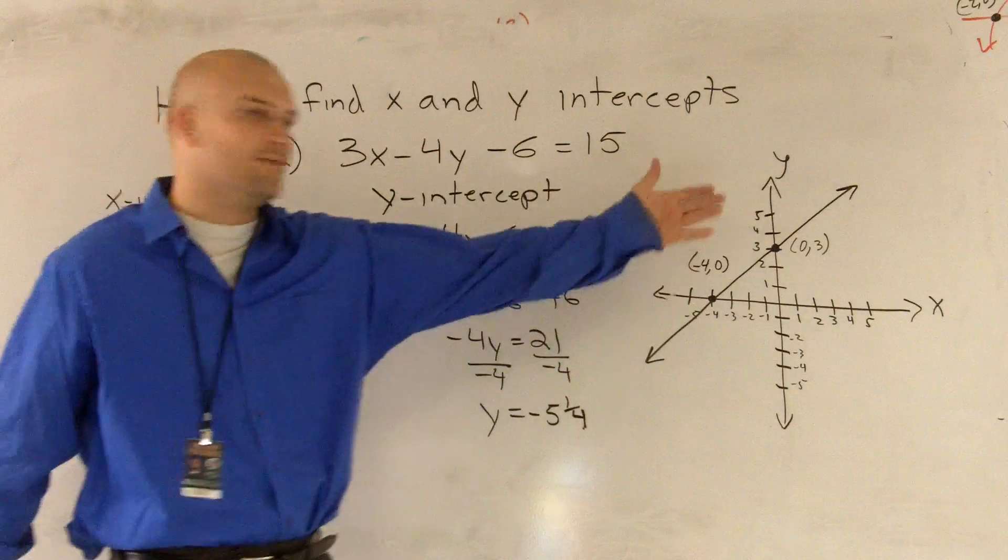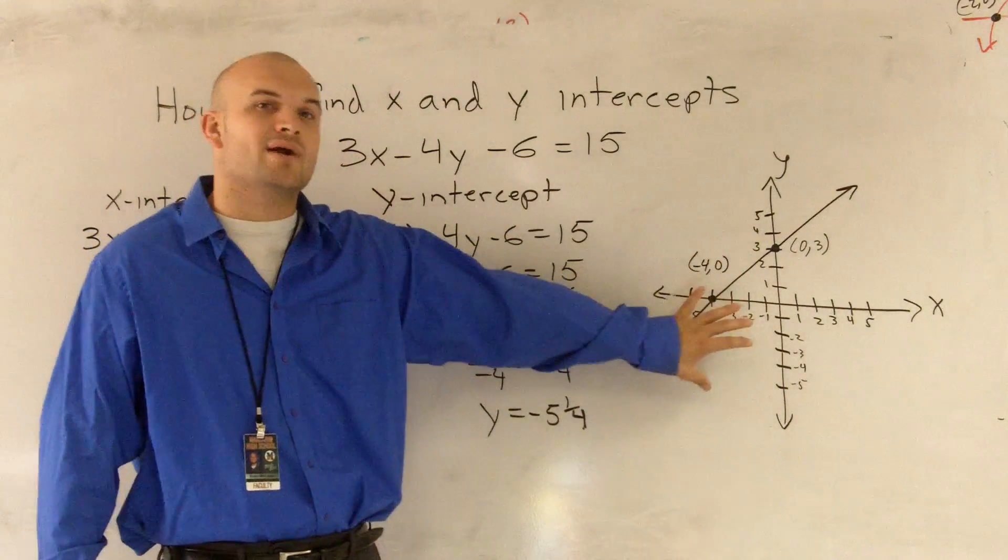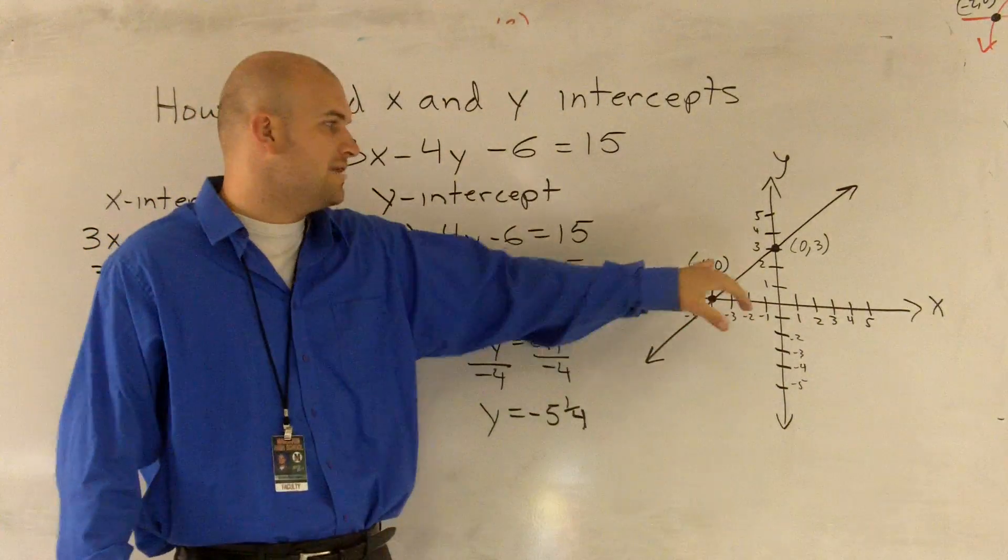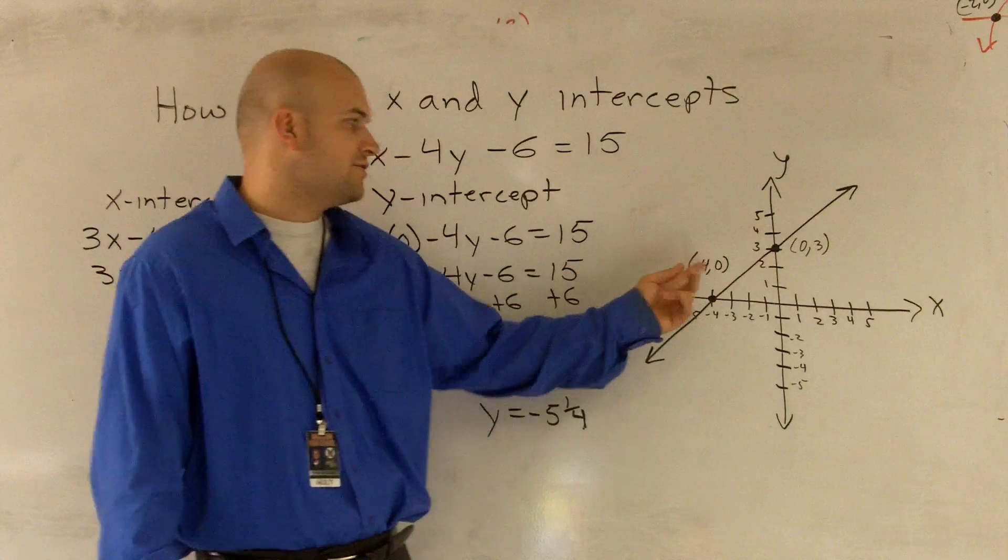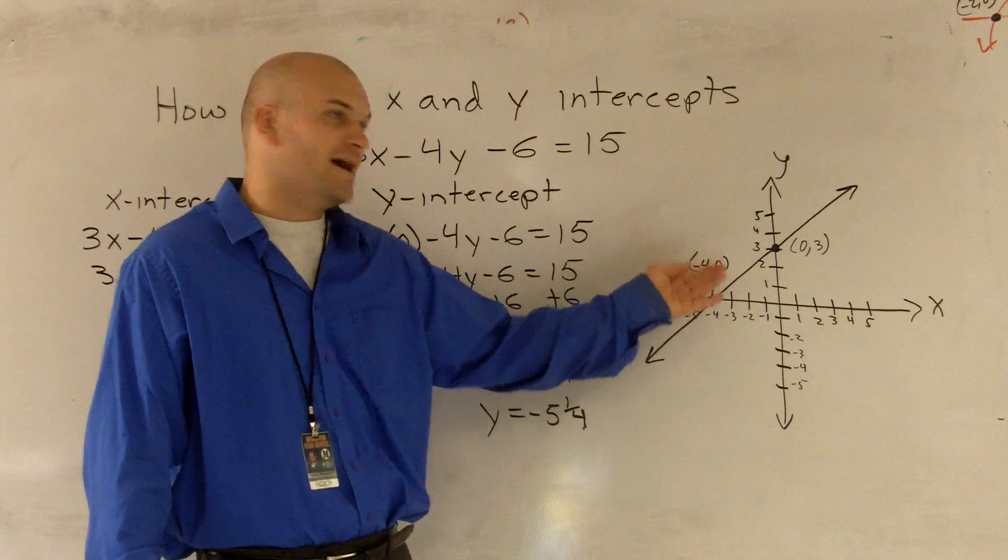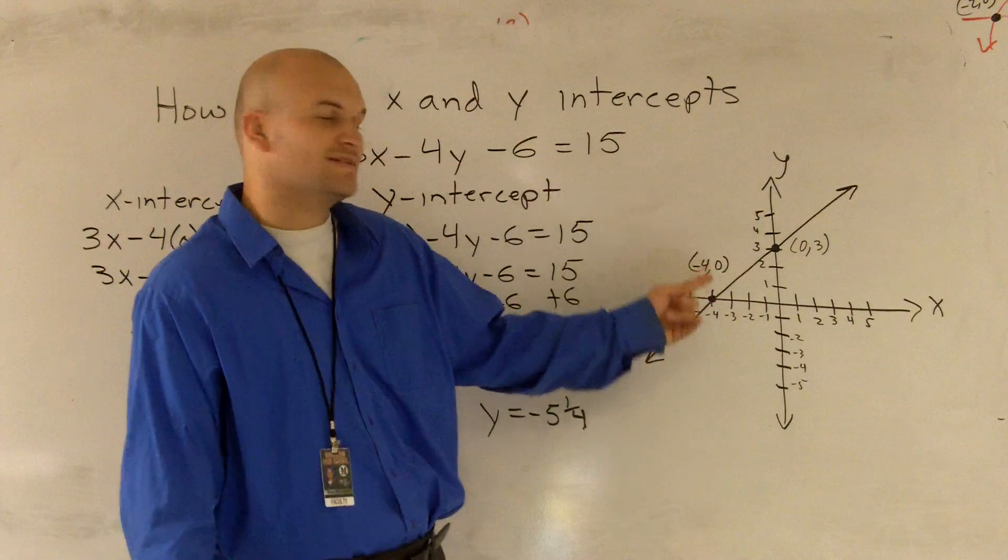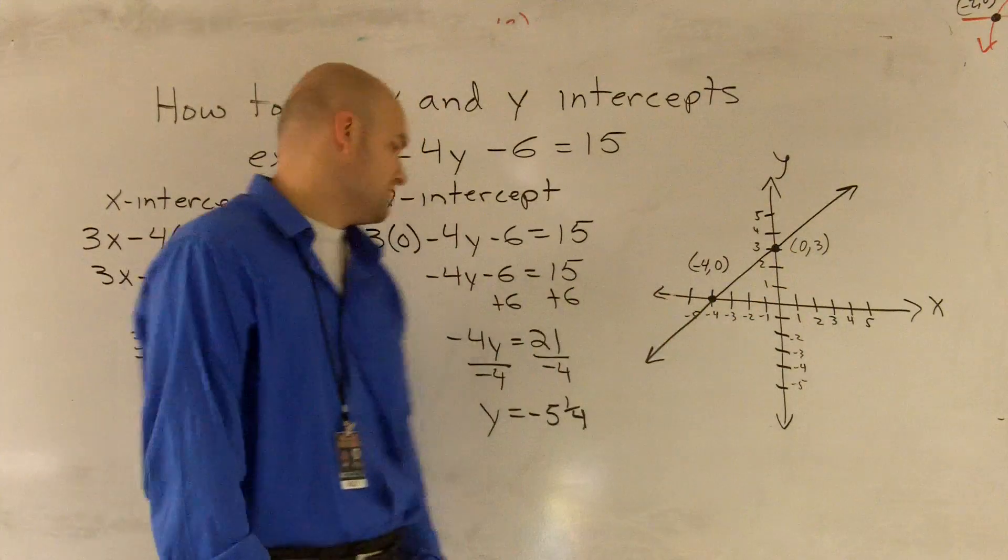Now, that is obviously not what this graph is, but I used this graph to show you that when you have an x and y-intercept, your y-intercept has an x-value of 0, and your x-intercept has a y-value of 0.